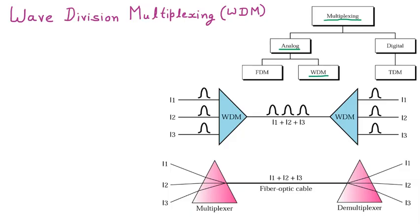First of all, we can say that wave division multiplexing is an analog technique. Wave means light, and light means the optical signal. So here we are going to combine optical signals — we can say that WDM is the technique for combining optical signals.